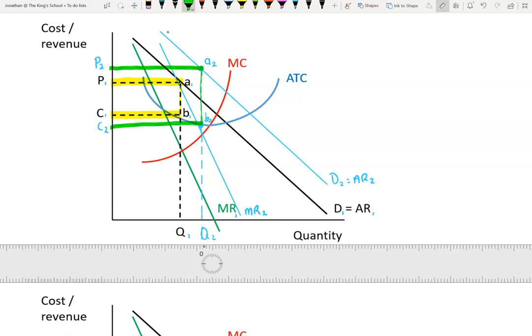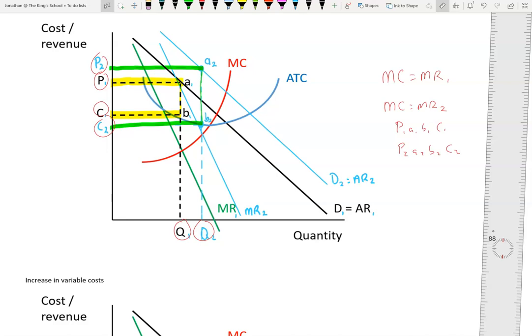And that is it. You just need to make sure when you're annotating it, when you're describing what has happened, you're using the terms MC equals MR1, MC equals MR2, and you're referring to every point. So Q1, Q2, P1, C1, P2, C2, and the different profit boxes, P1, A1, B1, C1, and P2, A2, B2, C2. If you refer to all of those things, you should have analyzed it well.